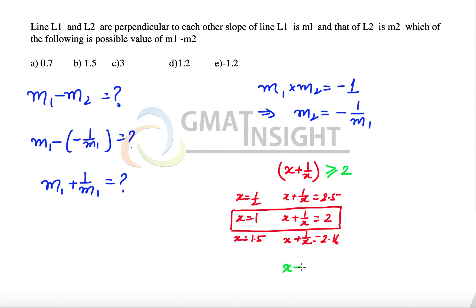Similarly, for the negative values, if we see x plus 1 over x, then the value will always be less than or equal to minus 2.